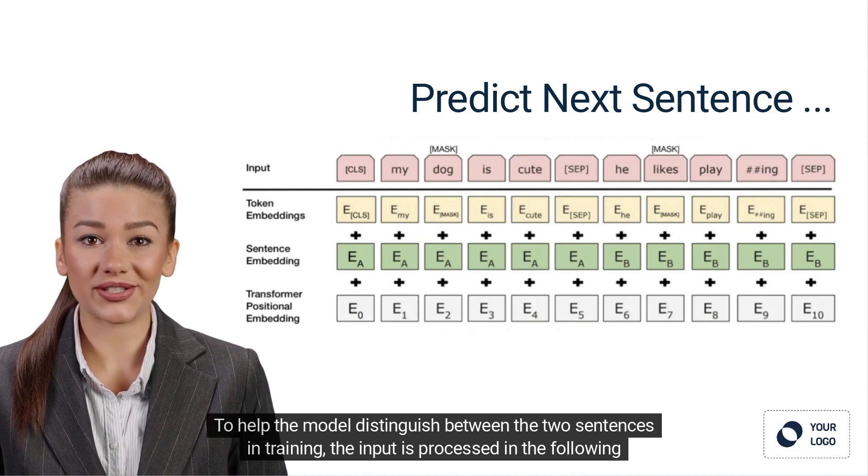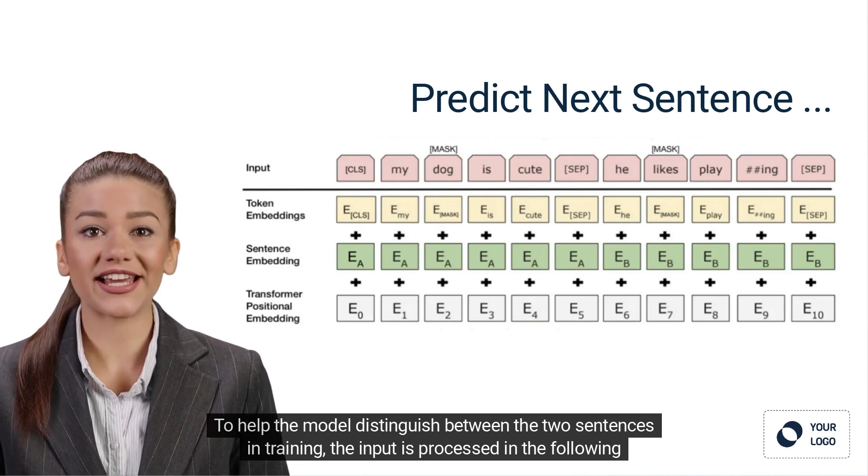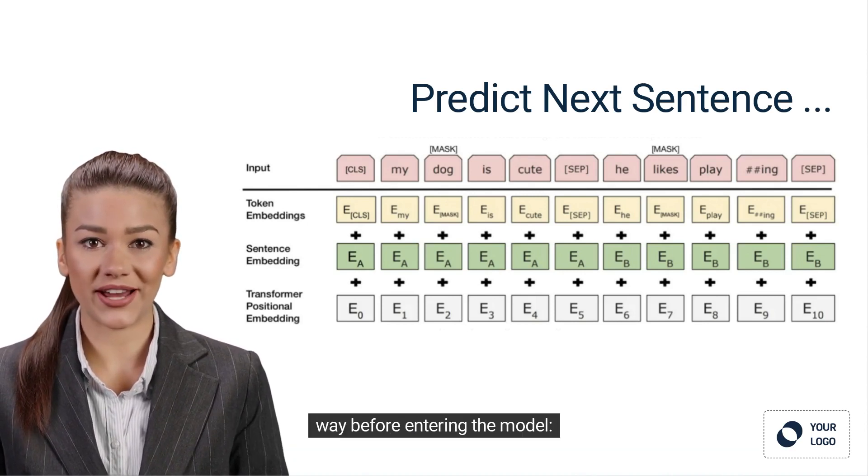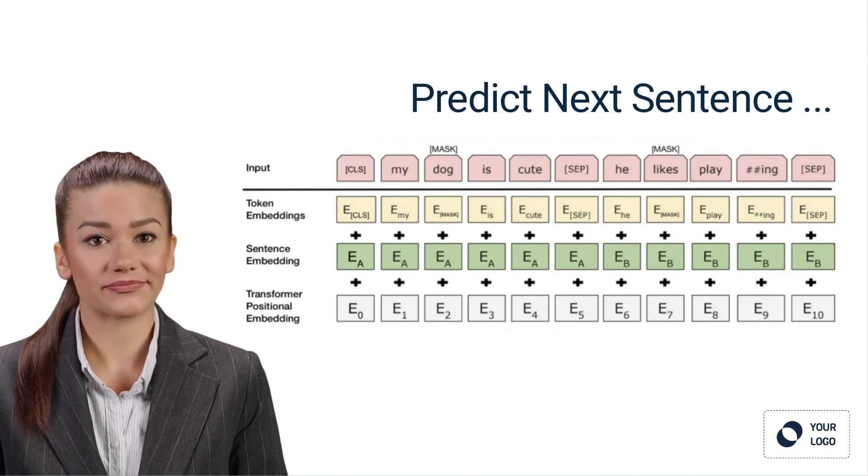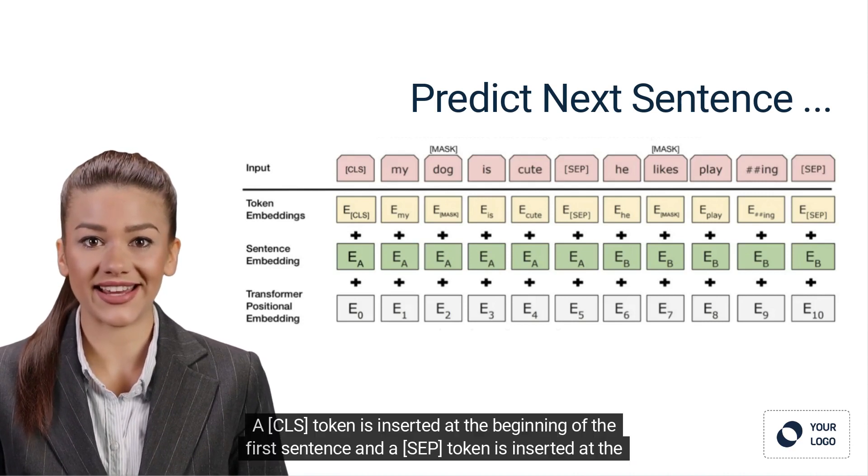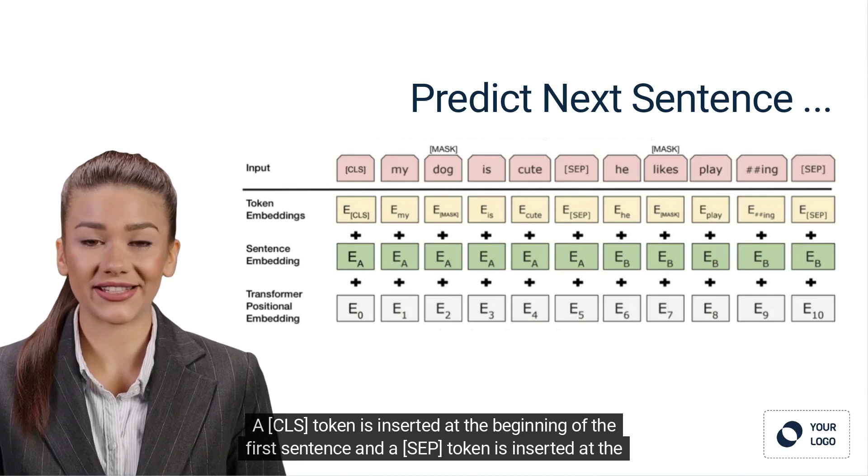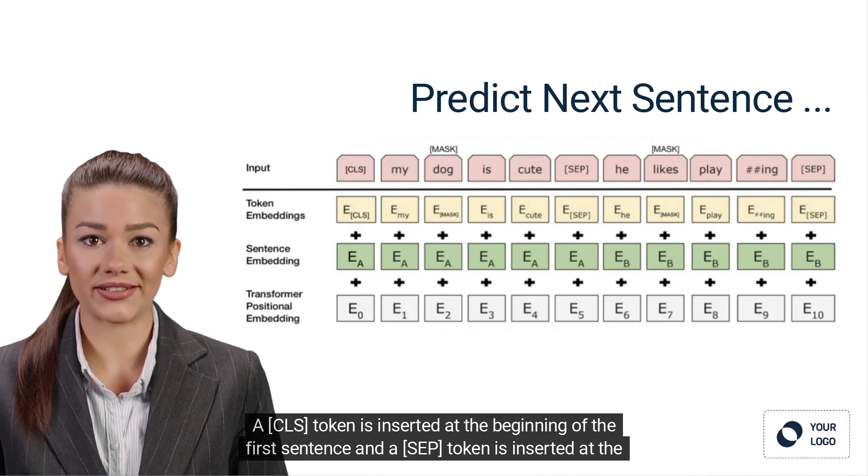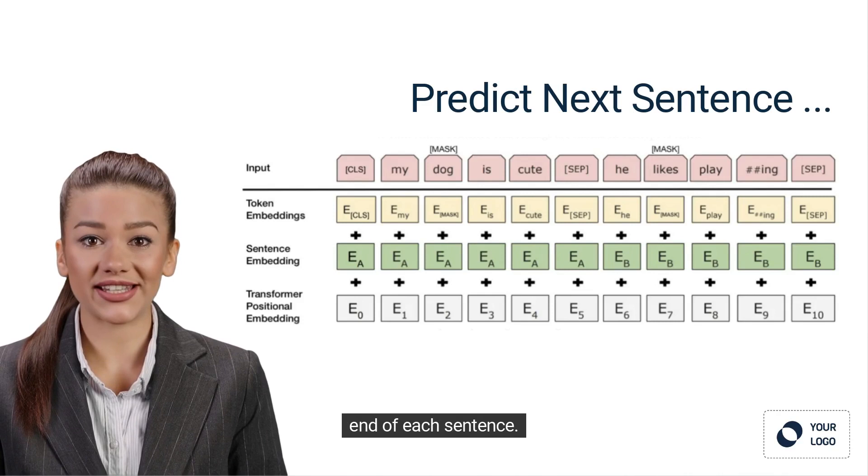To help the model distinguish between the two sentences in training, the input is processed in the following way before entering the model. 1. A CLS token is inserted at the beginning of the first sentence and a SEP token is inserted at the end of each sentence.